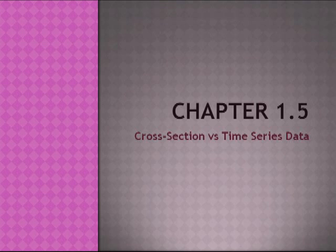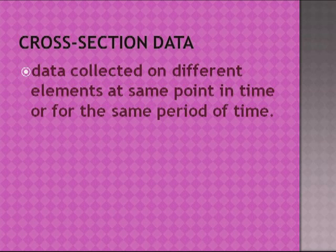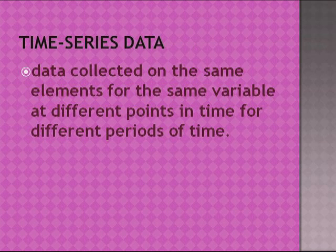Chapter 1.5: Cross-Section versus Time Series Data. Cross-section data is data collected on different elements at the same point in time or for the same period of time. Time series data is data collected on the same elements for the same variable at different points in time or for different periods of time.